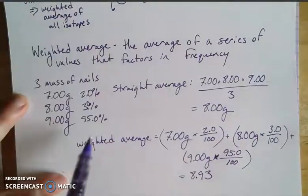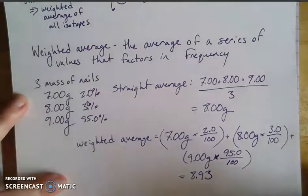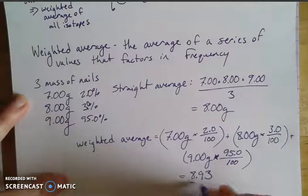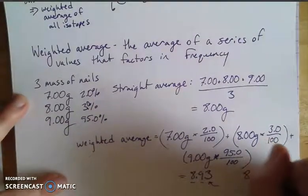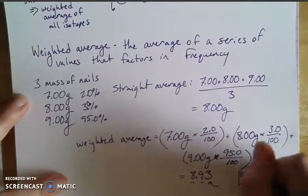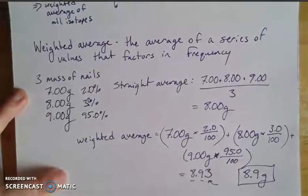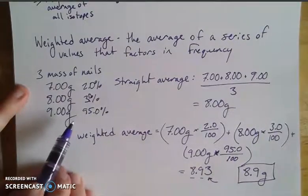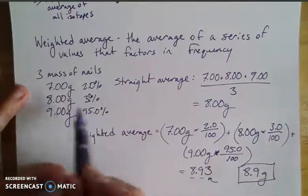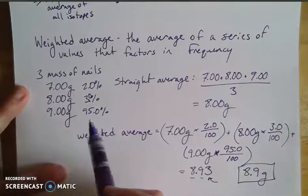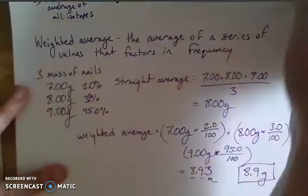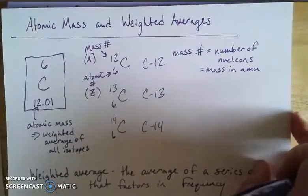When I add all those together, I get a weighted average of 8.93, but limited by the two significant figures in my percentages, I round to 8.9 grams. Comparing the two results, 8.9 is a truer value — it's closer to what's physically observed, because if 95% of the time I'm finding 9-gram nails, the weighted average should be closer to 9 grams.